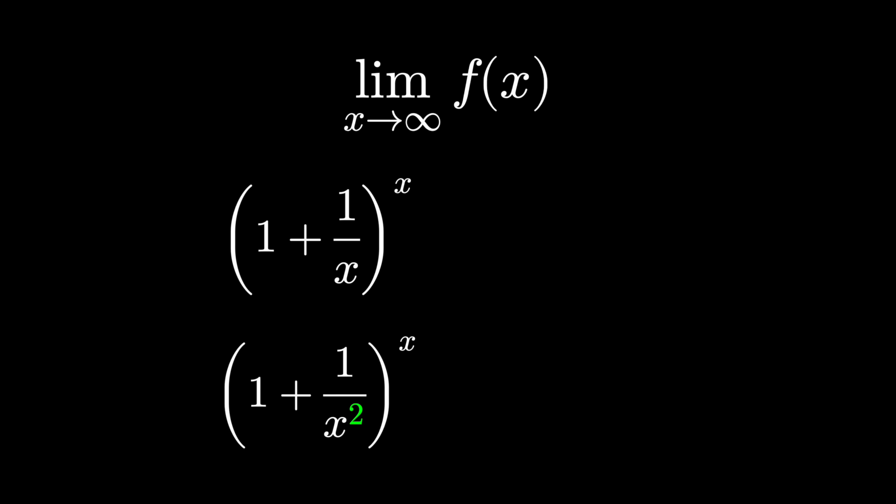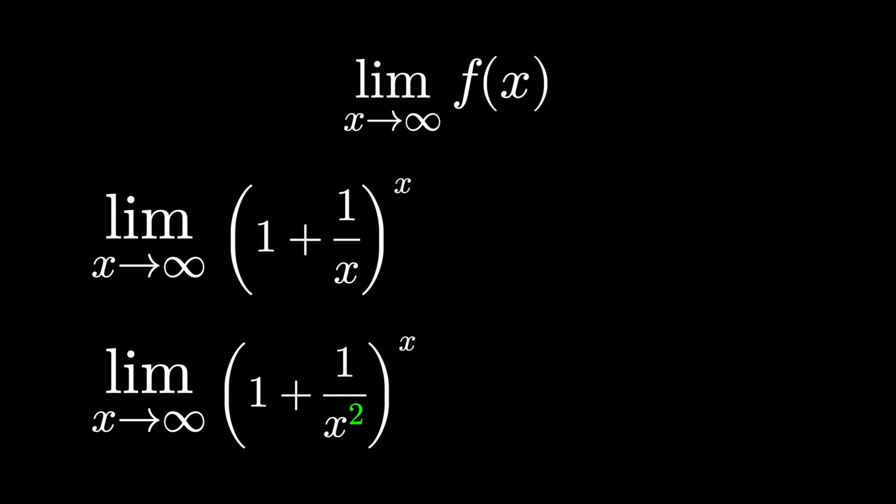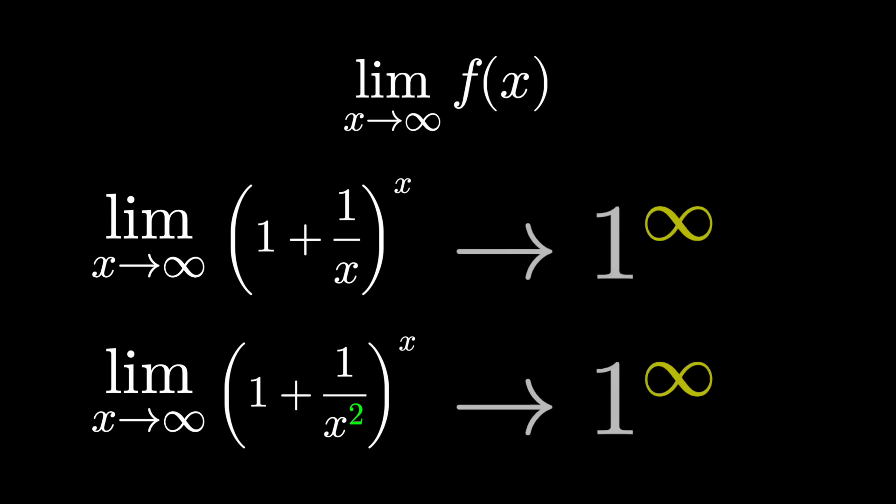Take these functions and let x get bigger and bigger — that is, take the limit of these functions as x grows to infinity. 1 over x and 1 over x squared would get very small, toward 0, and the exponents of x would grow very large out to infinity. Essentially, we have 1 plus 0 to the infinity, or 1 to the infinity.